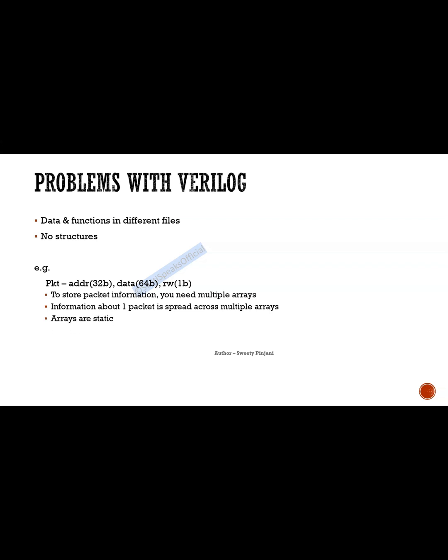Another problem is arrays in Verilog are static. If you want to have 100 different packets, you need to have array of size 100. Now in case actually you are just using 20 packets, then the remaining 80 memory locations are wasted. And say if you want to add 20 more packets, you want to have 120, then you need to go change the size of the array to 120 so that it can accommodate 120 packets.